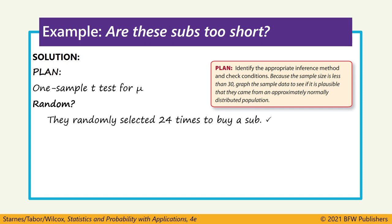We have a randomly selected sample, and the 24 subs that were selected is less than 10% of all subs made by this restaurant. Now, we don't have a sample size that's large enough because this is less than 30, and it doesn't note anything about the sample coming from a population that's approximately normal. So we would make a graphical display of our data.